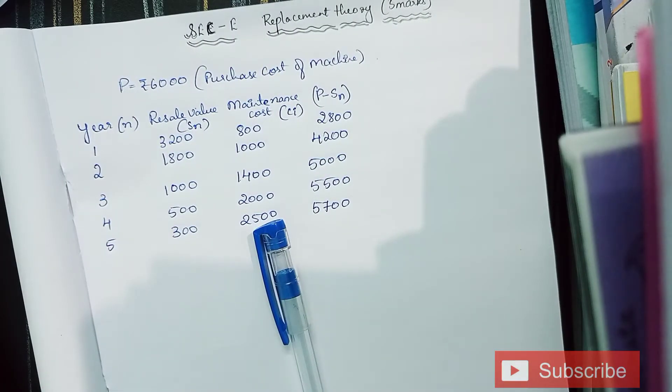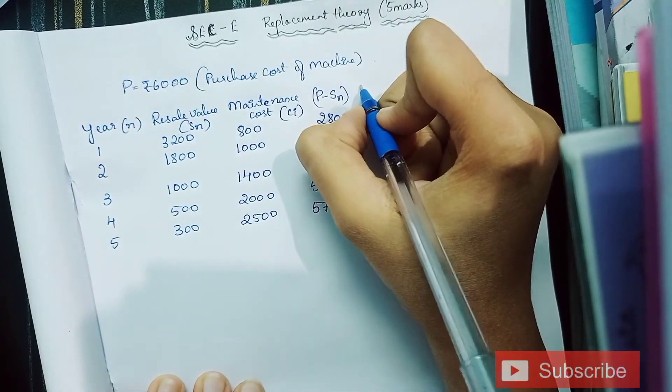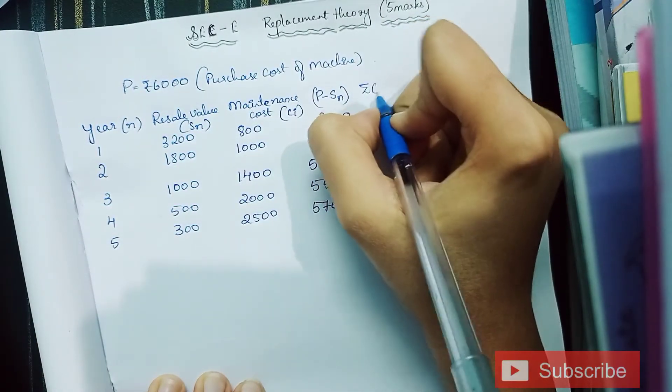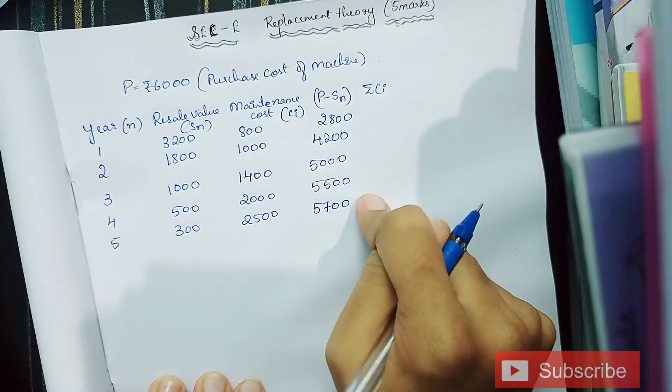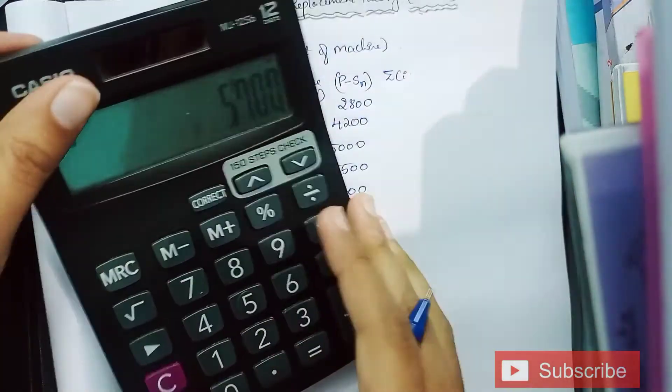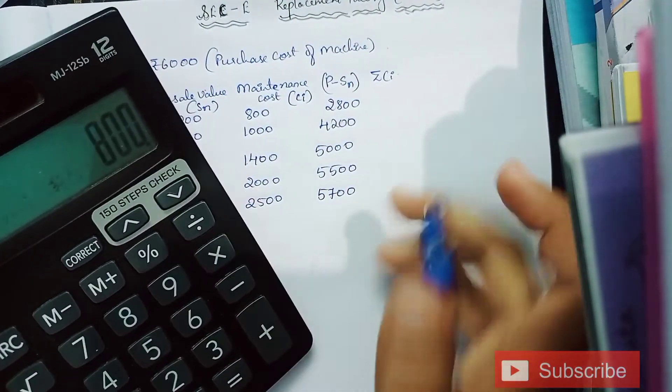Next column is summation CI. Here we are adding all the CI values, which is the maintenance cost values. First value remains the same which is 800.